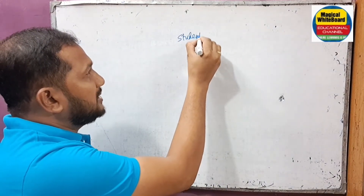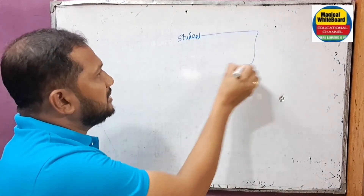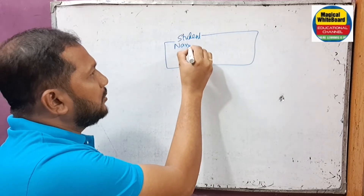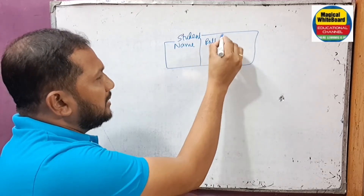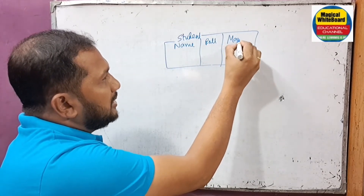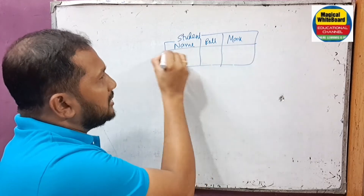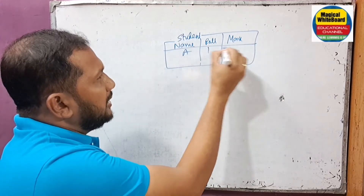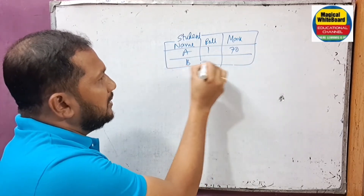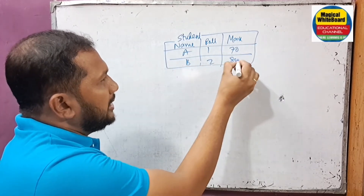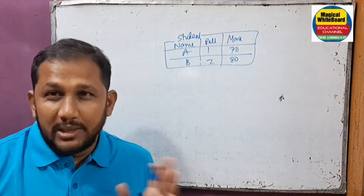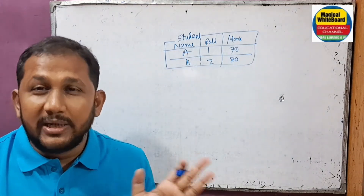We have basic information: name, role, and mark. I will put all these attributes in my data with a small amount of sample data. I will give the student table the name 'student-info.'